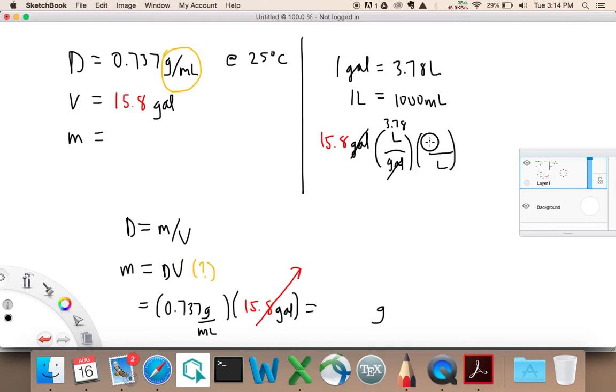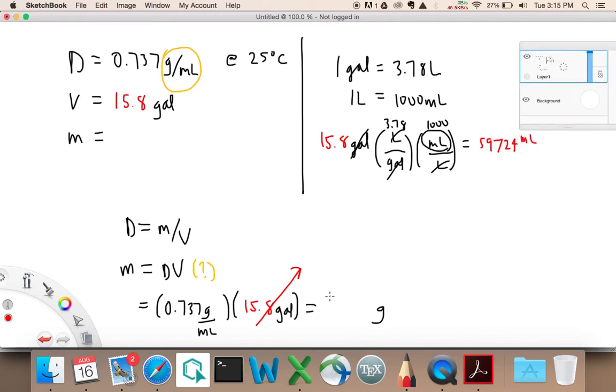But we want it in mils, so we're going to have to cross off liters also. Alright, these are going to cross off, and we'll be left with mils. Alright, so let's go ahead and calculate what that is. I'm picking up my calculator right now. You should do the same thing. It's going to be 15.8 times 3.78 times 1,000 is equal to, I'm going to put this in red because your work might have a different number, 59,724 mils.